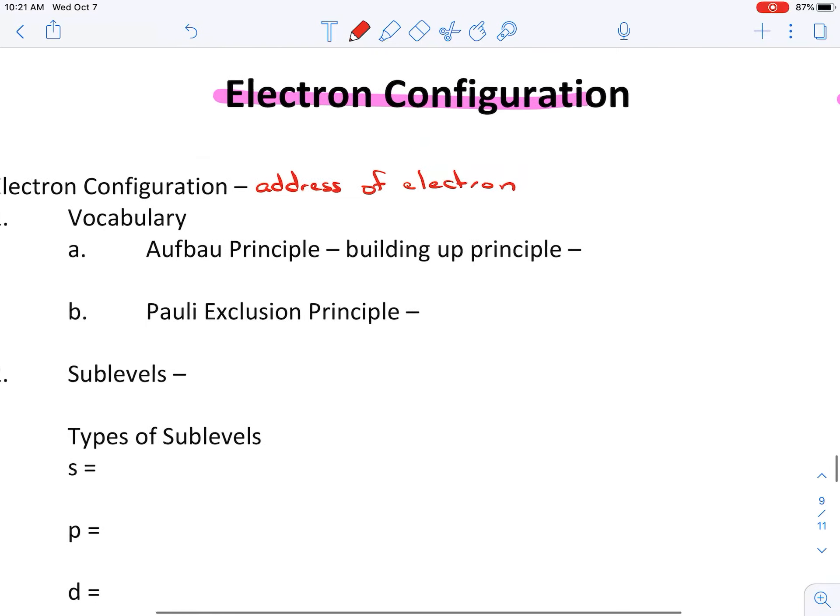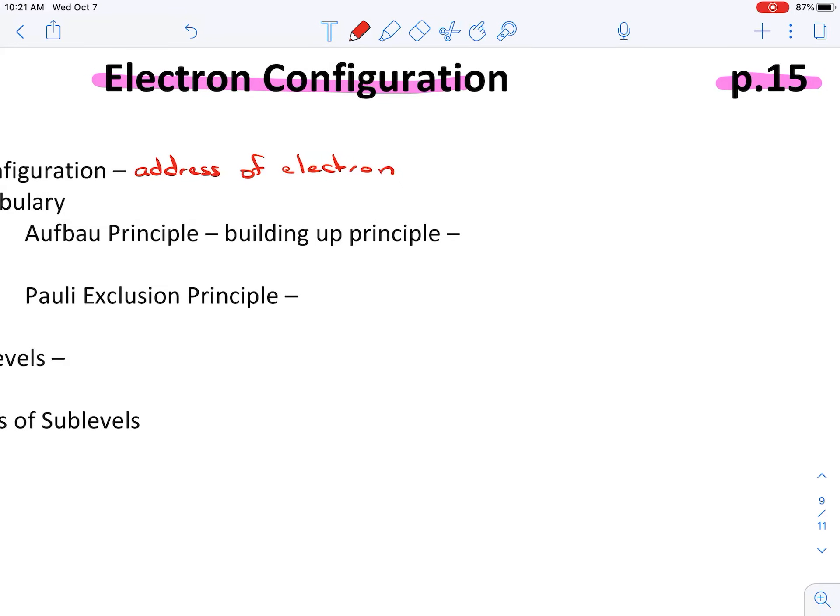Some important vocab here. We have the Aufbau principle. Obviously it's German. It's the building up principle, and all this means is we're starting with the first element, with hydrogen, and build our way up from there. On to the Pauli exclusion principle. Pauli exclusion principle just says that no two electrons can have the same address. That's kind of like you in your house. You hopefully, or maybe you have a room that's to yourself, and so that's your specific address.